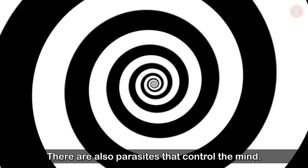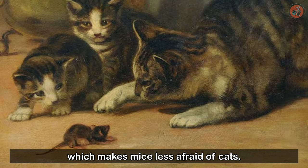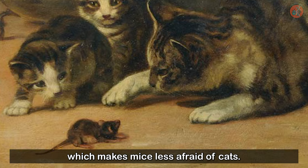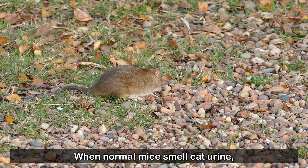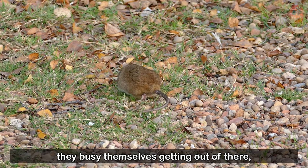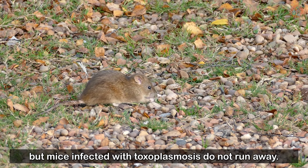There are also parasites that control the mind. A prime example is Toxoplasma gondii, which makes mice less afraid of cats. Rats infected with Toxoplasmosis are not afraid of cats. When normal mice smell cat urine, they busy themselves getting out of there. But mice infected with Toxoplasmosis do not run away.